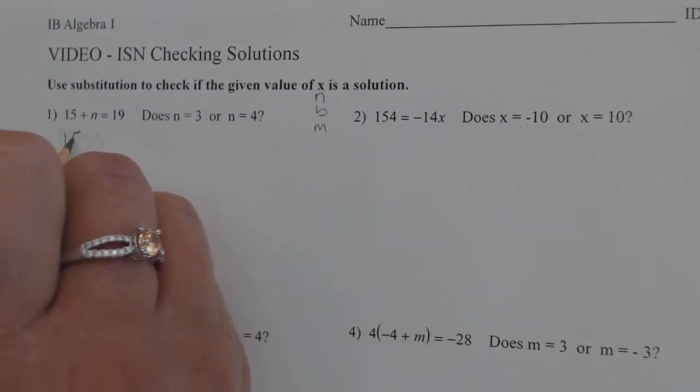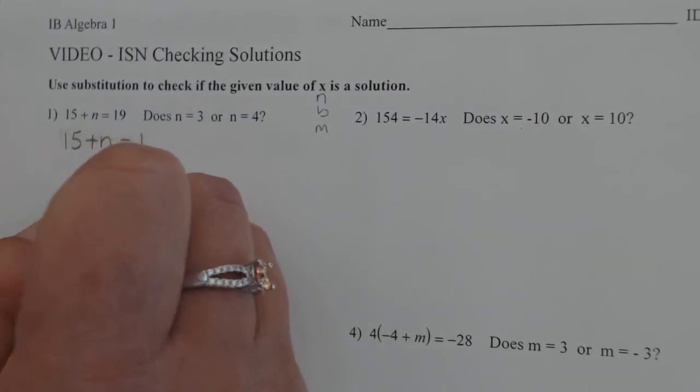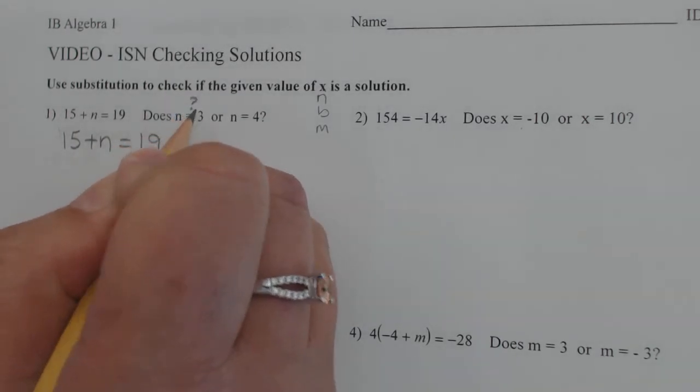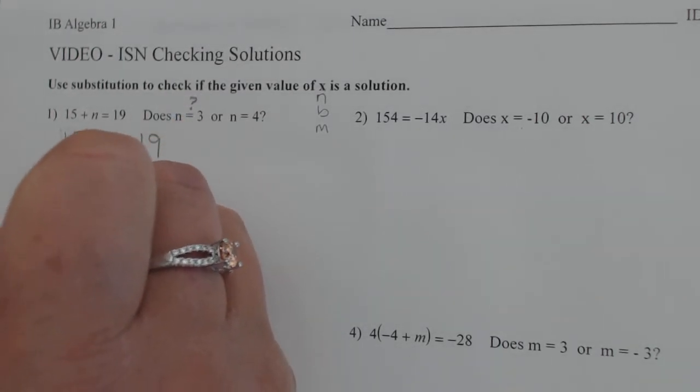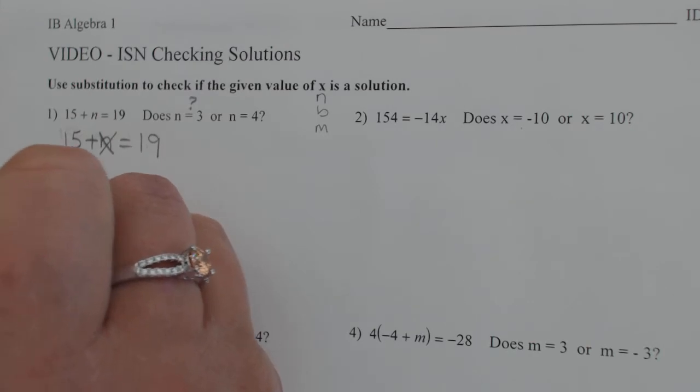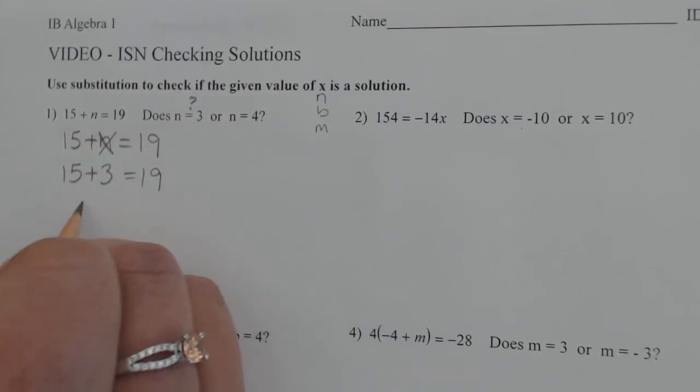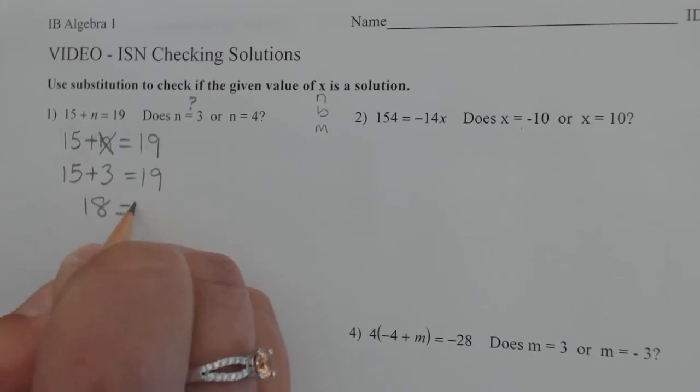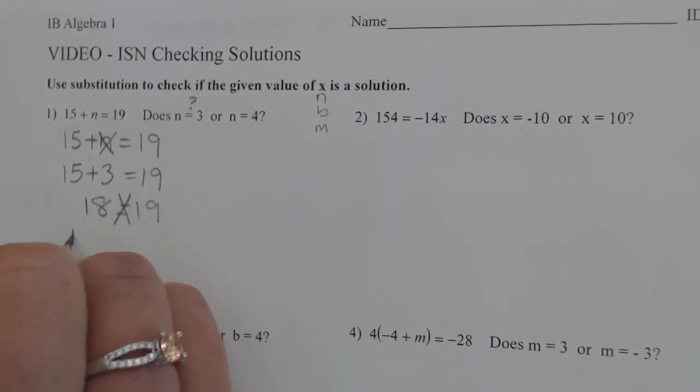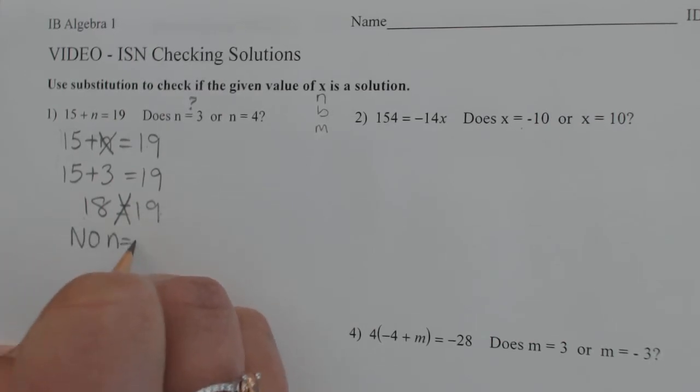So here we go. I'm going to rewrite the first one, 15 plus n equals 19. Let's check to see if n equals 3 first. So we're going to take out this n and we're going to input the 3. So 15 plus 3 equals 19. Let's add the 15 and the 3 together, we get 18. And we ask ourselves, is 18 equal to 19? We say no. So no, n equals 3 is not a solution.